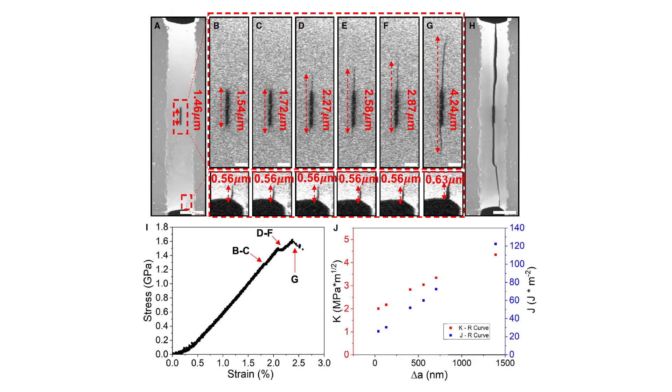In monolayer amorphous carbon, the presence of these random and crystalline regions changes that crack path. Instead of one unstoppable tear, the crack can get deflected, branched, or even partially bridged by tougher local structures.